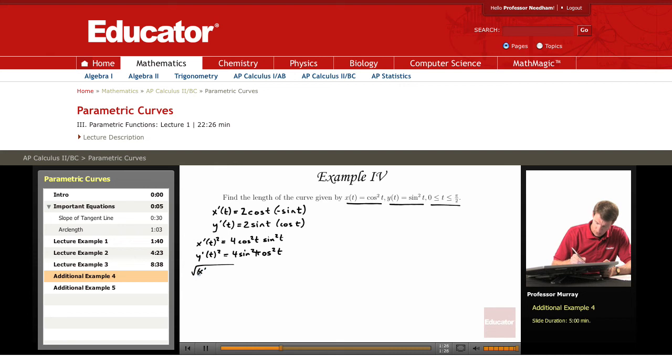And if we add those up x'² + y'², well those are the same thing so we just get the square root of 8sin²t cos²t.